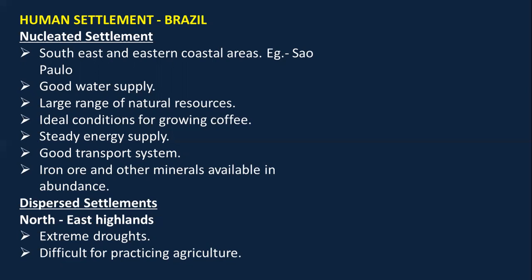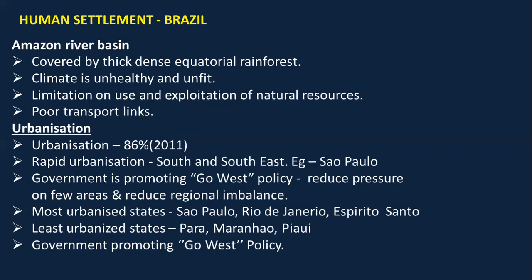The second type is dispersed settlement. It is found in the northeast highlands where there are extreme droughts and it is very difficult to practice agriculture. The Amazon River basin is covered by thick dense equatorial forest, and this climate is unhealthy and unfit for people to live in. There is also limitation on use and exploitation of land due to dense, inaccessible terrain and poor transport links.